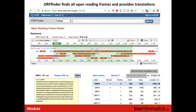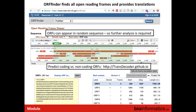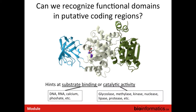We developed a tool called TransDecoder, which you'll use during the workshop this afternoon. It not only identifies all open reading frames in a sequence but applies statistical models to test those reading frames and determine whether they look like likely coding sequence versus non-coding sequence. So even if we don't find good BLAST matches to other proteins, we can mine those predicted coding regions for further evidence.